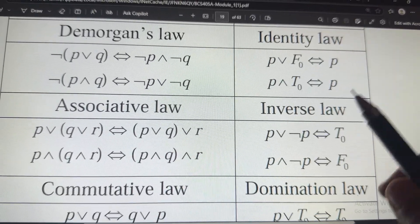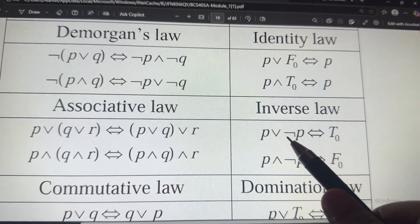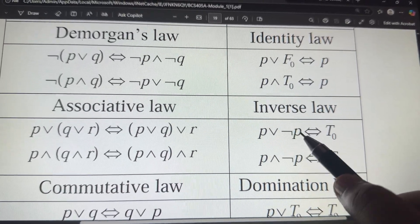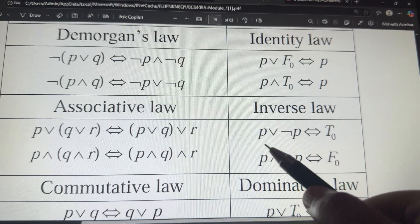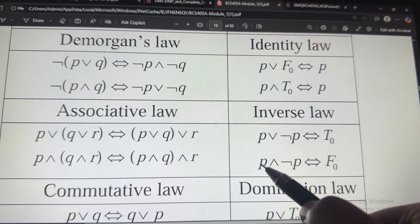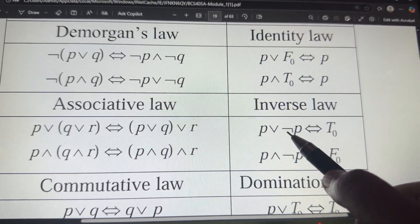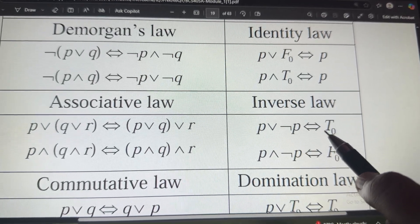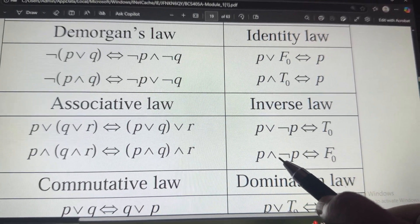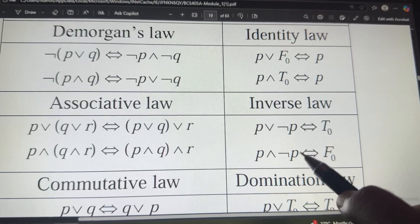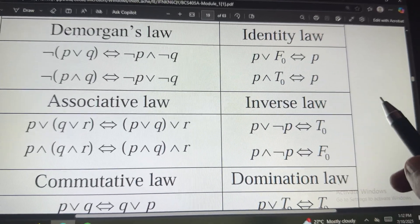Then, we have inverse law. Inverse is nothing but you will apply inverse to the right hand side. Left hand side, you keep it as it is like P or NOT of P is true. P and NOT of P is false. Like that you have to remember.